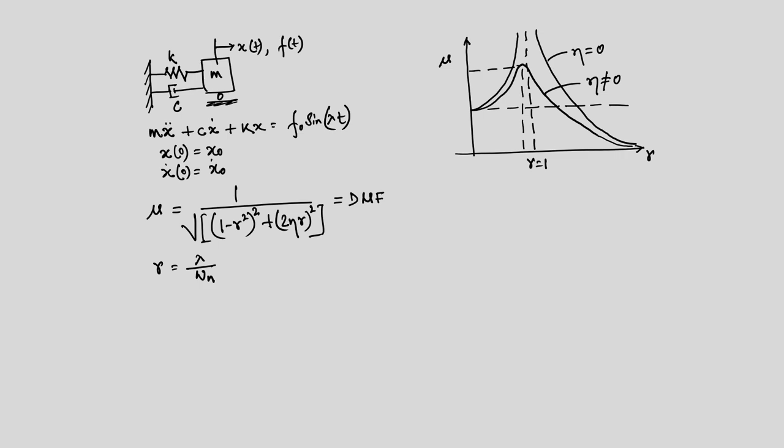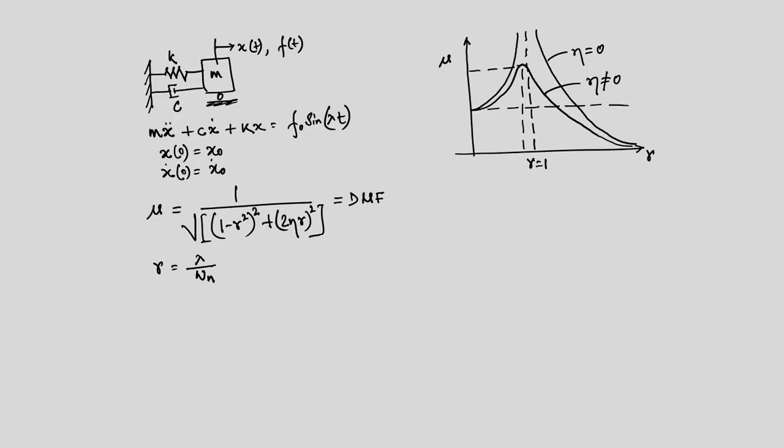Today we will see how we can use this information to quantify damping. Recall from previous lectures we discussed the logarithmic decrement technique, using which we can quantify damping from a measured time history response of a free vibrating body. Today we are going to derive how we can use the steady-state frequency response to quantify damping. The maximum value of the dynamic magnification factor μ_max equals 1 over 2η, and we are going to use this expression today.